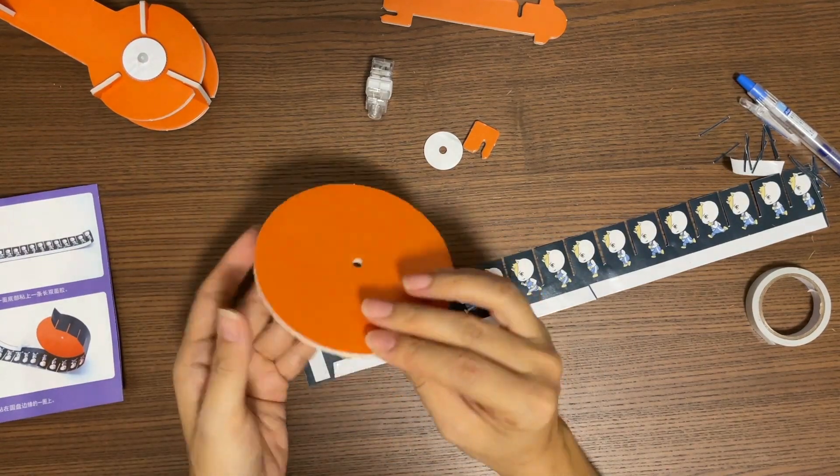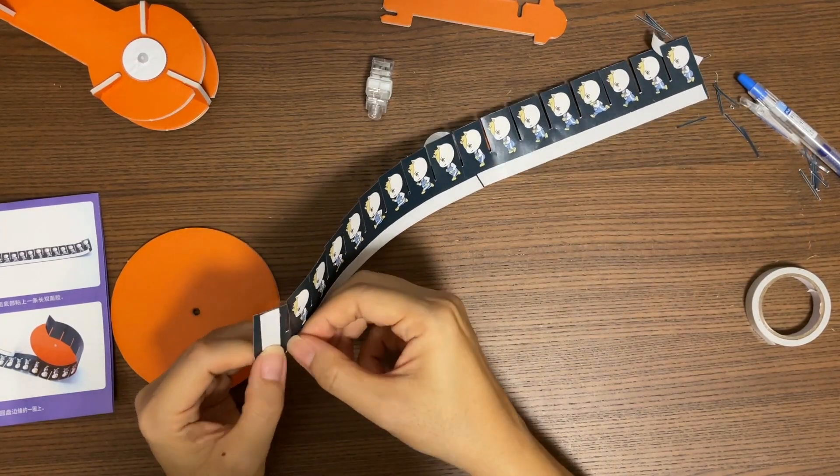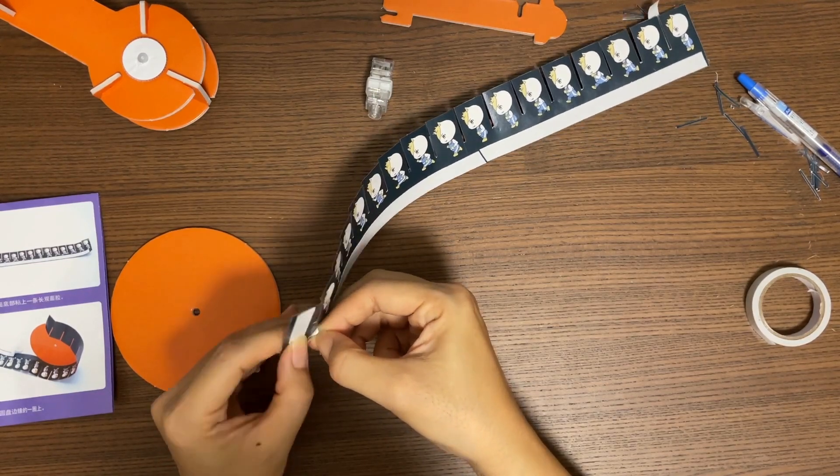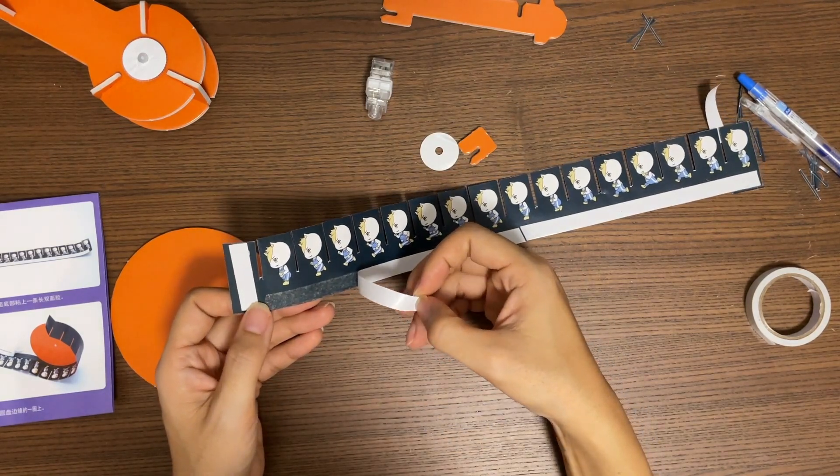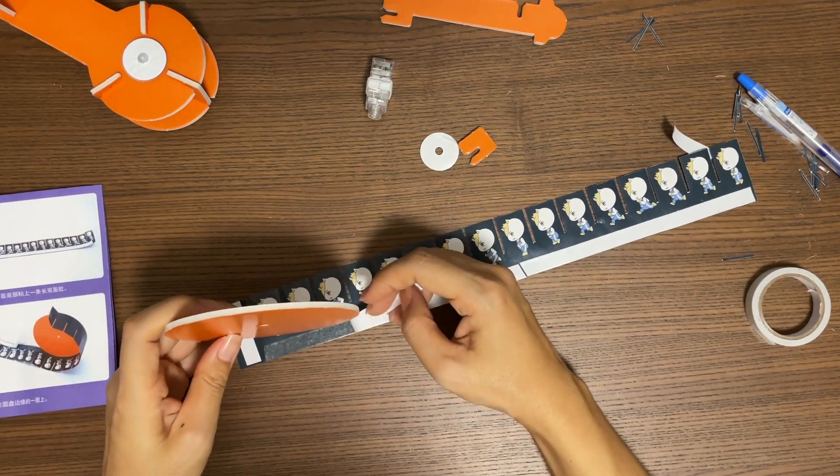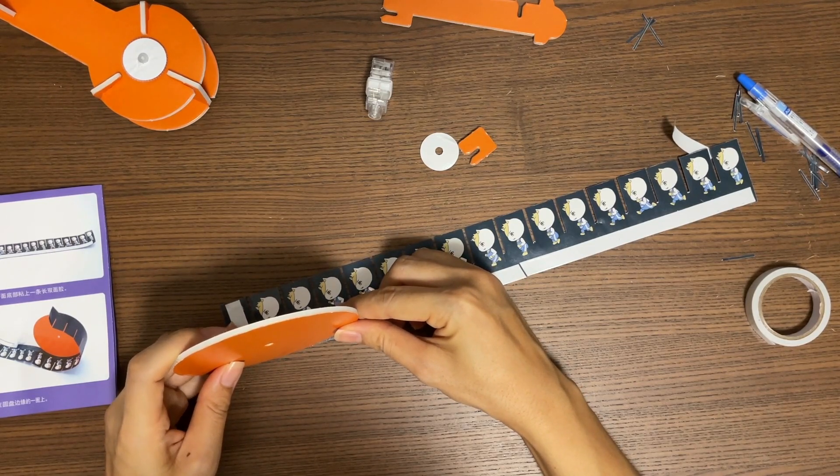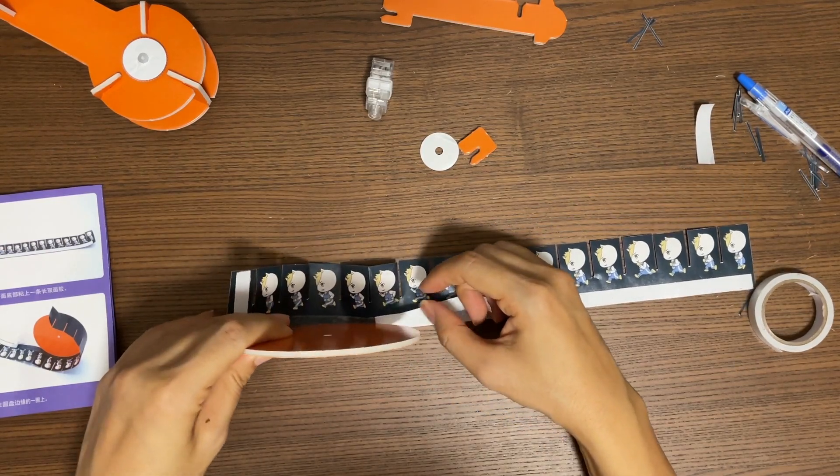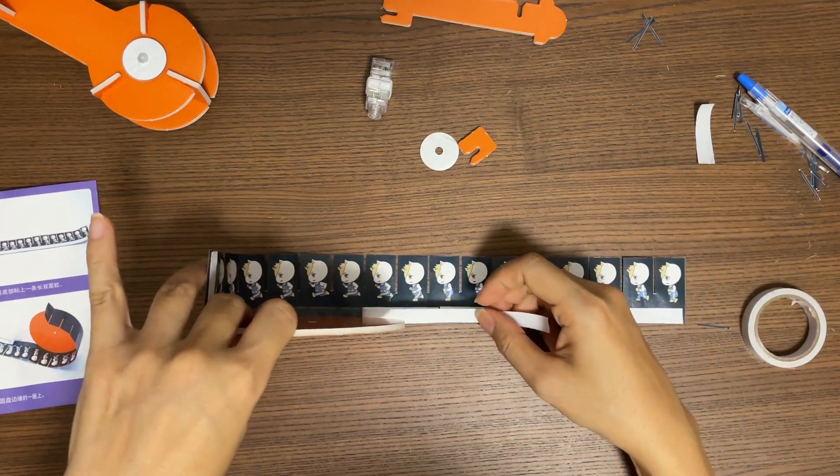Now let's take this big circle and remove the top layer from this double-sided tape. Don't remove it all the way, just remove one portion. And then put the circle on top of the double-sided tape. As we roll the circle, we will remove the top layer of the double-sided tape. So do it slowly.